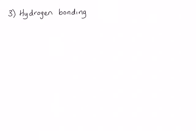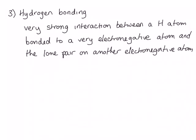The last intermolecular force is hydrogen bonding — though that is really a misnomer, because we are not talking about true bonds; we are talking about intermolecular forces. Hydrogen bonding is actually the strongest of the intermolecular forces. It is a very strong interaction between a hydrogen bonded to a very electronegative atom and the lone pair on another electronegative atom, making it a very specific case of a dipole-dipole interaction. The electronegative atoms we generally mean are nitrogen, oxygen, and fluorine.